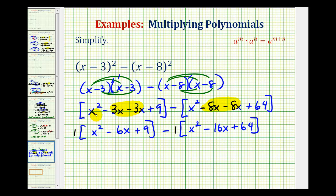So again, distributing one is not going to change anything here. We have x squared, minus six x plus nine. But then here we're going to have minus x squared. And here we have a negative times a negative, that's going to be plus 16x. Here we have a negative times a positive, that'll be minus 64.